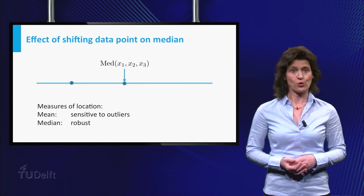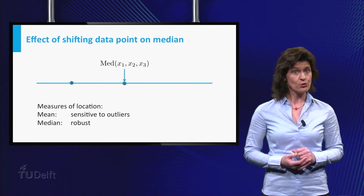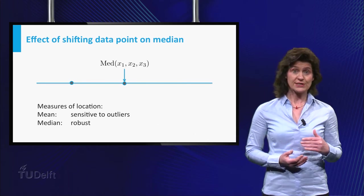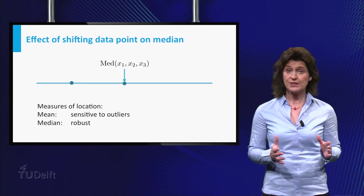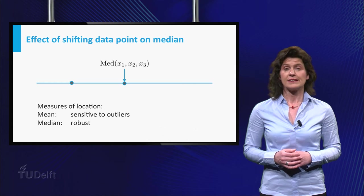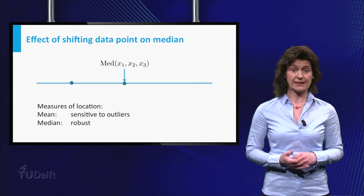You can think of more measures of center or location. A property all these measures should have, though, is that if you add a constant C to all individual data points, its location summary should do the same. Giving it a little thought, you will see that the mean and median of a dataset have this property.